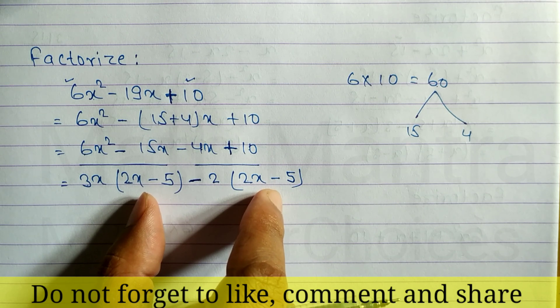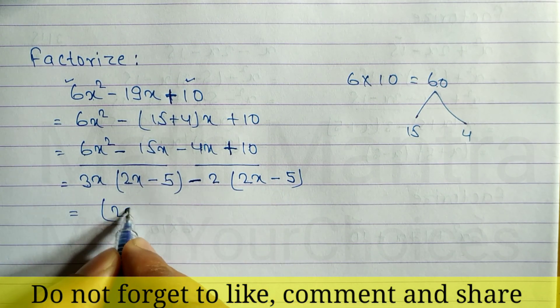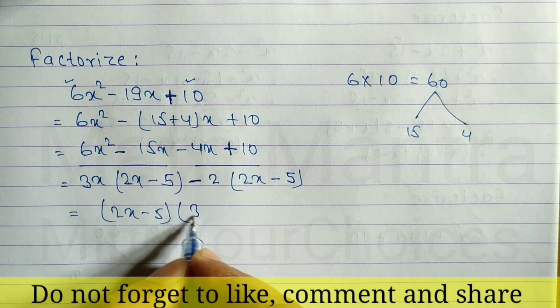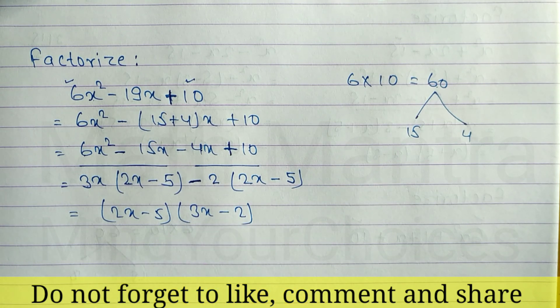Now, you can see here 2x - 5 is common in both terms. So, we can write (2x - 5) times (3x - 2). This is your answer. Hope you understand this question.